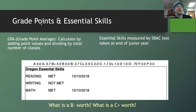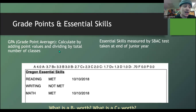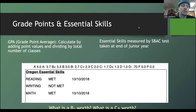Looking at grade points: an A is a 4.0, an A-minus is a 3.7, and so on. To calculate GPA, you add up grade points — for example, six A's and one A-minus — and divide by the total number of classes. Oregon Essential Skills are in reading, writing, and math. For students in the class of 2026, essential skills will be a requirement, and they're often tied into curriculum at the school.